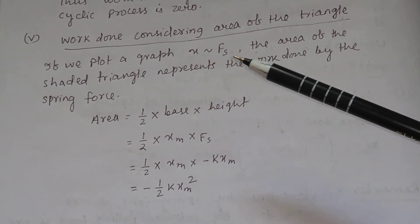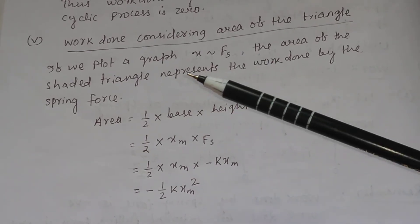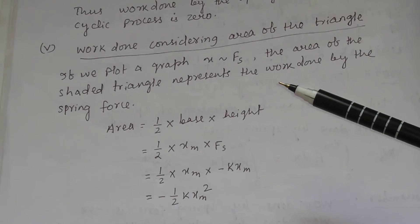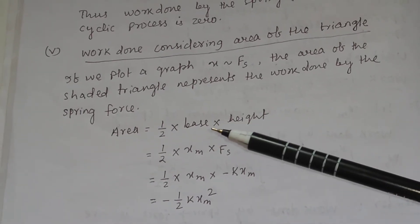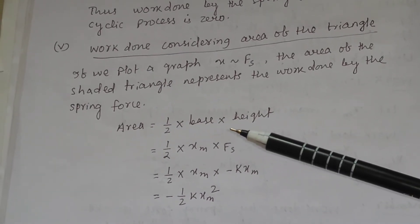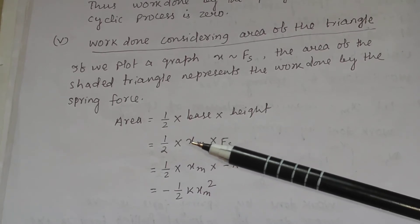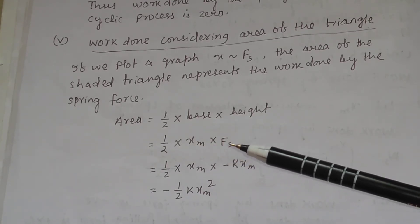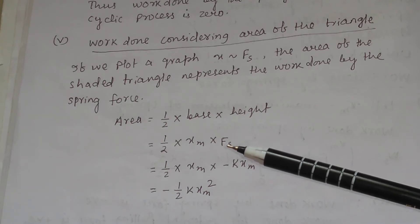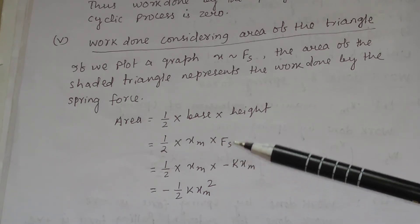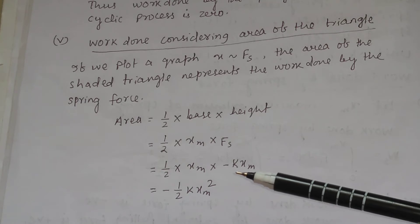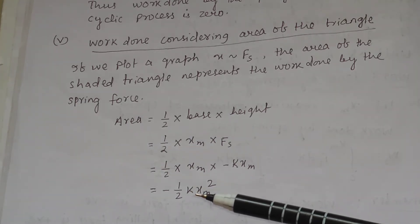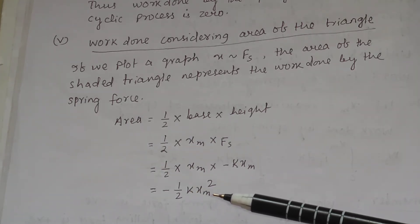If we plot a graph of x versus fs, the area of the shaded triangle represents the work done by the spring force. Area = ½ × base × height = ½ × xm × fs. Substituting the spring force fs = -k × xm, the area equals -½kxm².